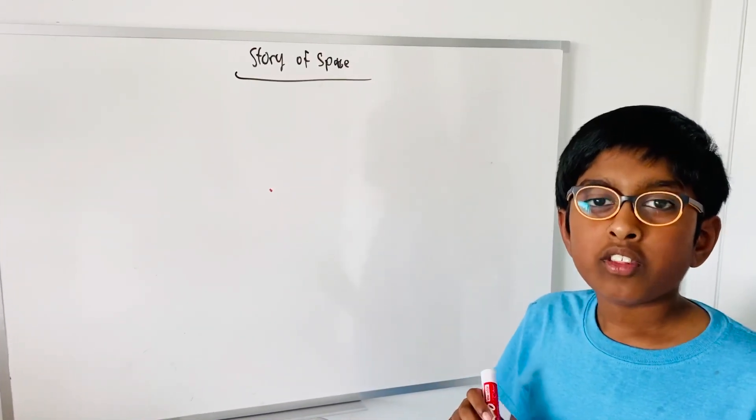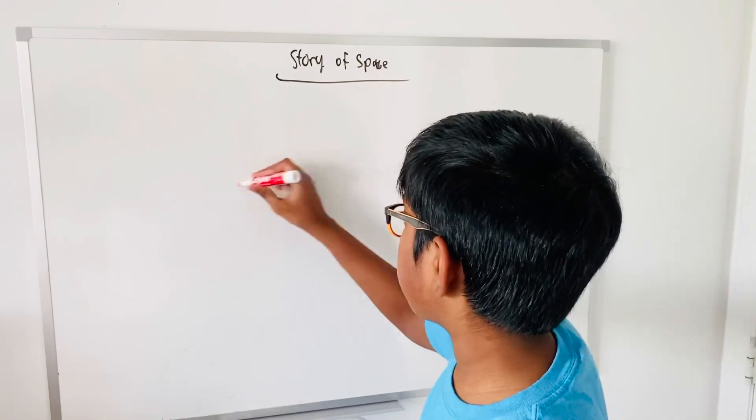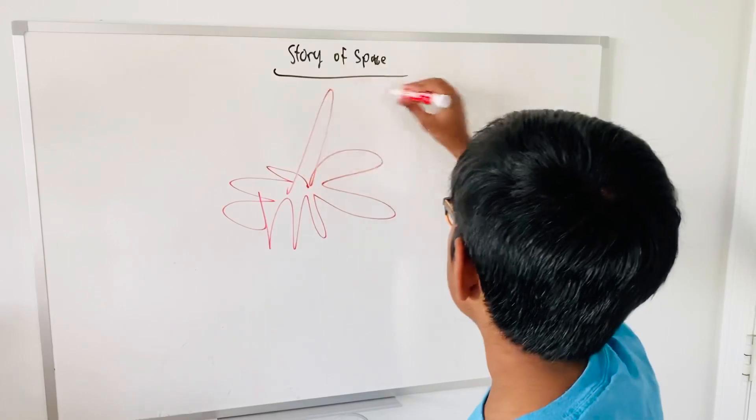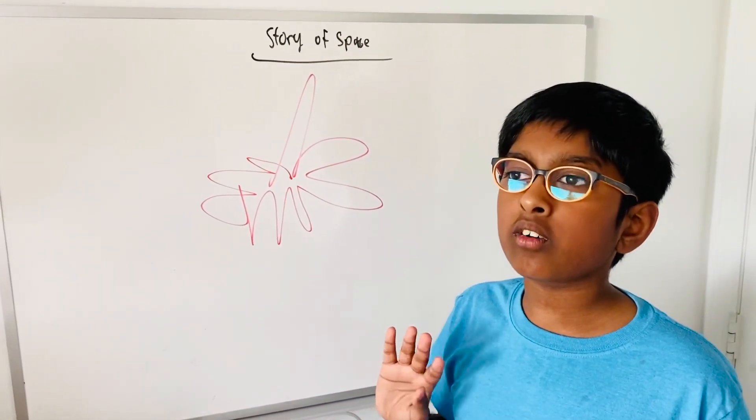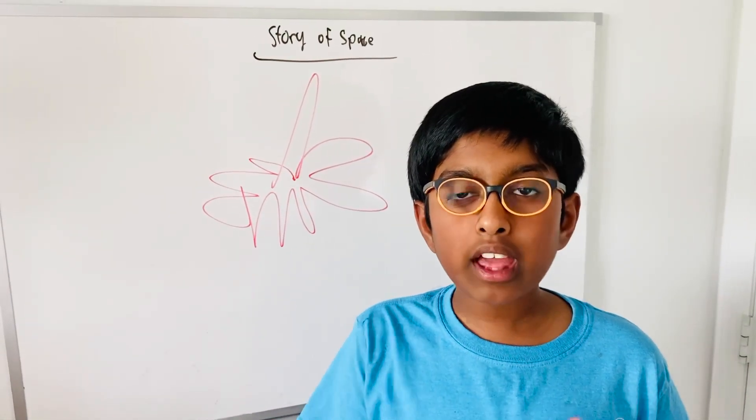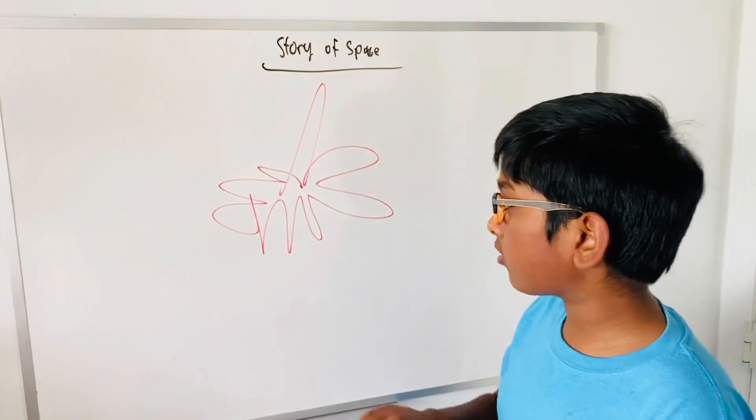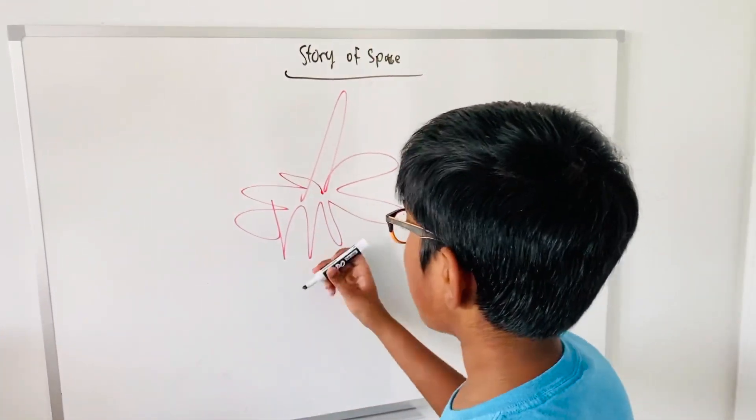Then, 13.5 billion years ago, this thing exploded and then it formed everything black. So all the space, everything in the whole universe became black. Like if you go to space, you see everything's black. That's exactly what happened. This explosion is called the Big Bang.